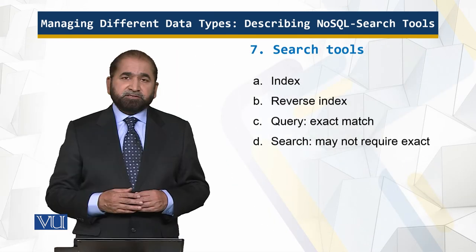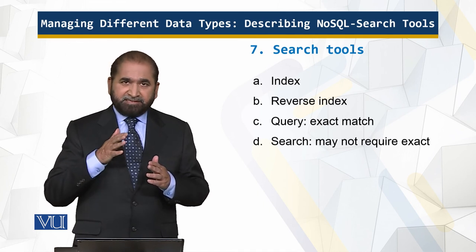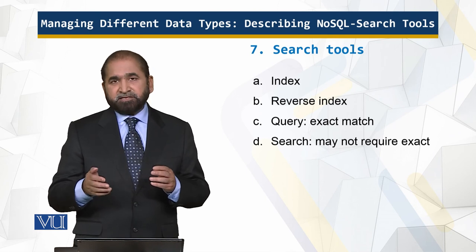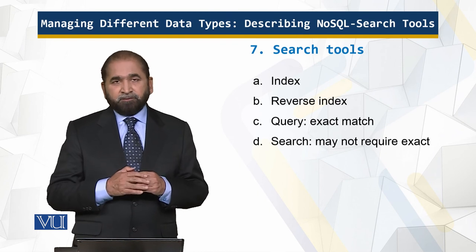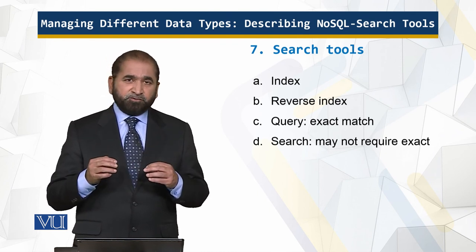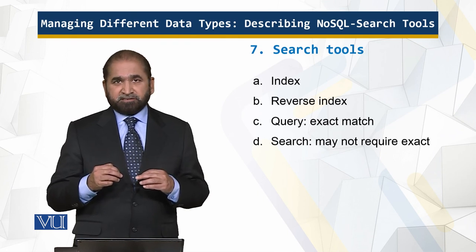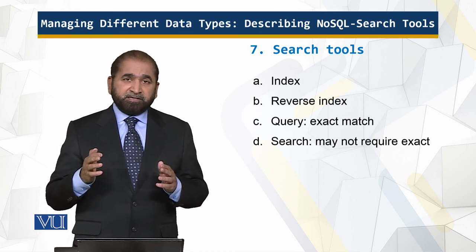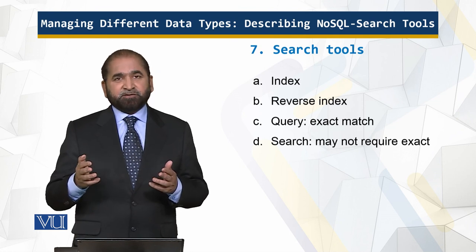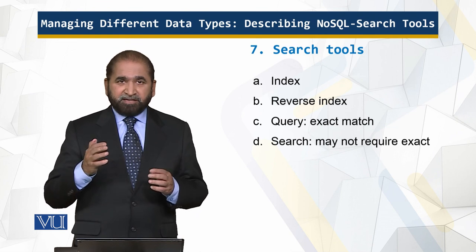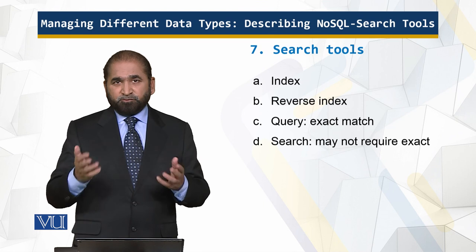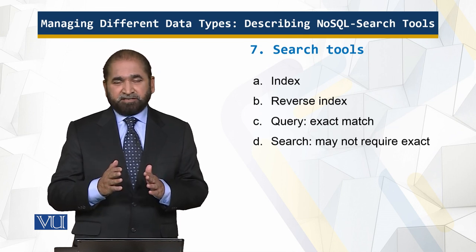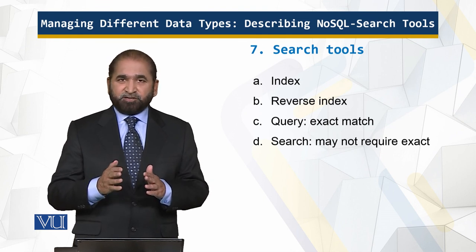For search tools, indexing takes you directly to what you want without searching all of the data or all of the documents, and there is reverse indexing which points back towards what you are looking for. There is an important difference between what you get through a query and what you get through a search engine result: a query gives an exact match, but in the context of NoSQL — where there is no structured query language — we get results that are close to what we are looking for, then we differentiate, go into more details, and perform further search. This is one of the key similarities between NoSQL solutions and search engines in terms of architecture, functionality, and search.